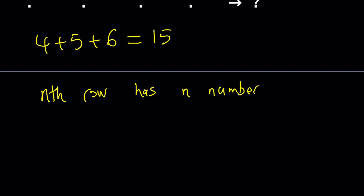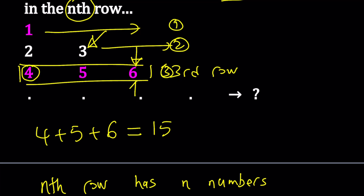Knowing the number of terms in a row is useful because if you can find the last number, finding the first number is easy. For example, if I know that 6 is the last number in the third row, to find the first number I can subtract three and then add one. Subtracting three takes me to the last number of the previous row, which is 3, and then adding one gives the first number of the next row.